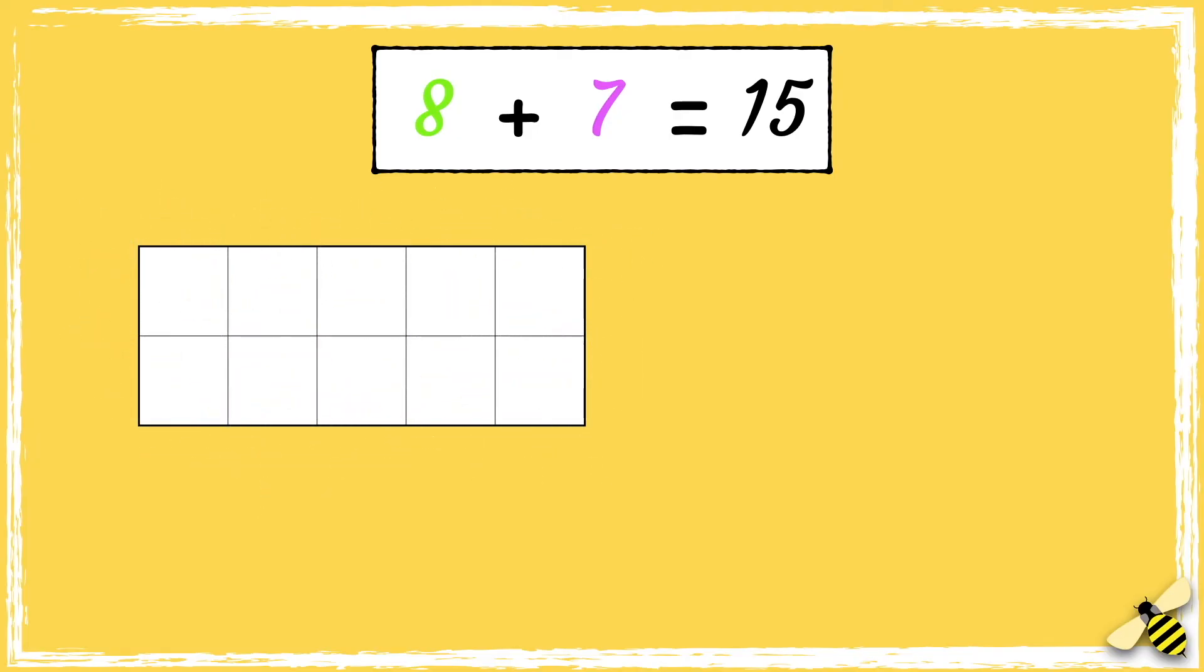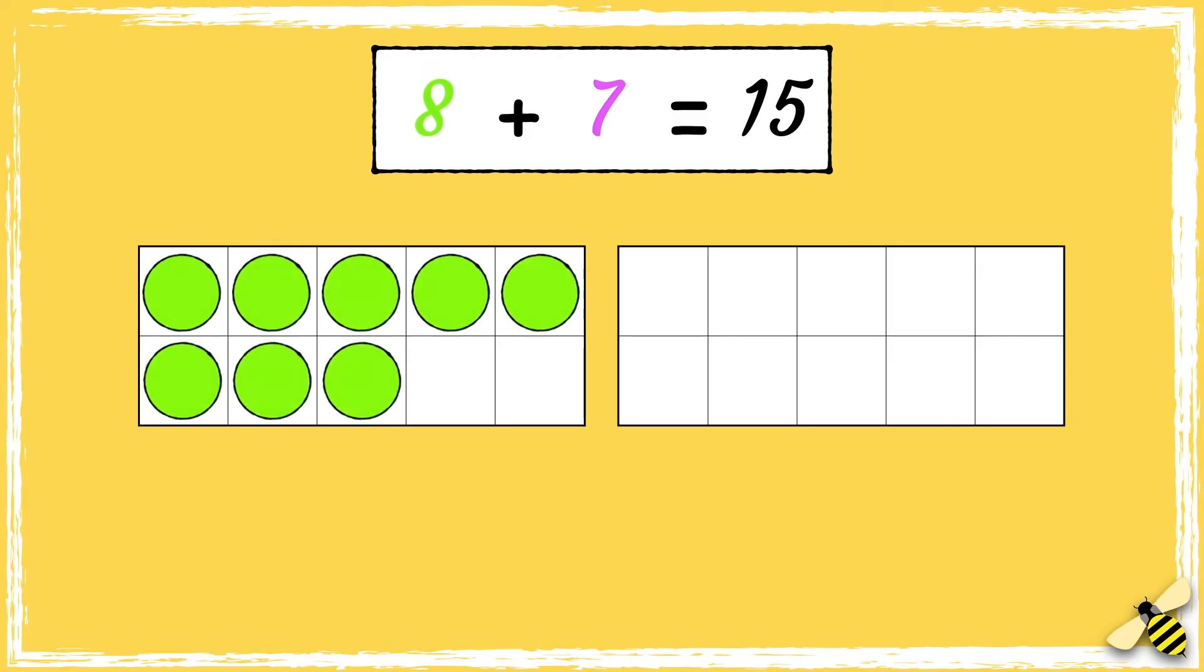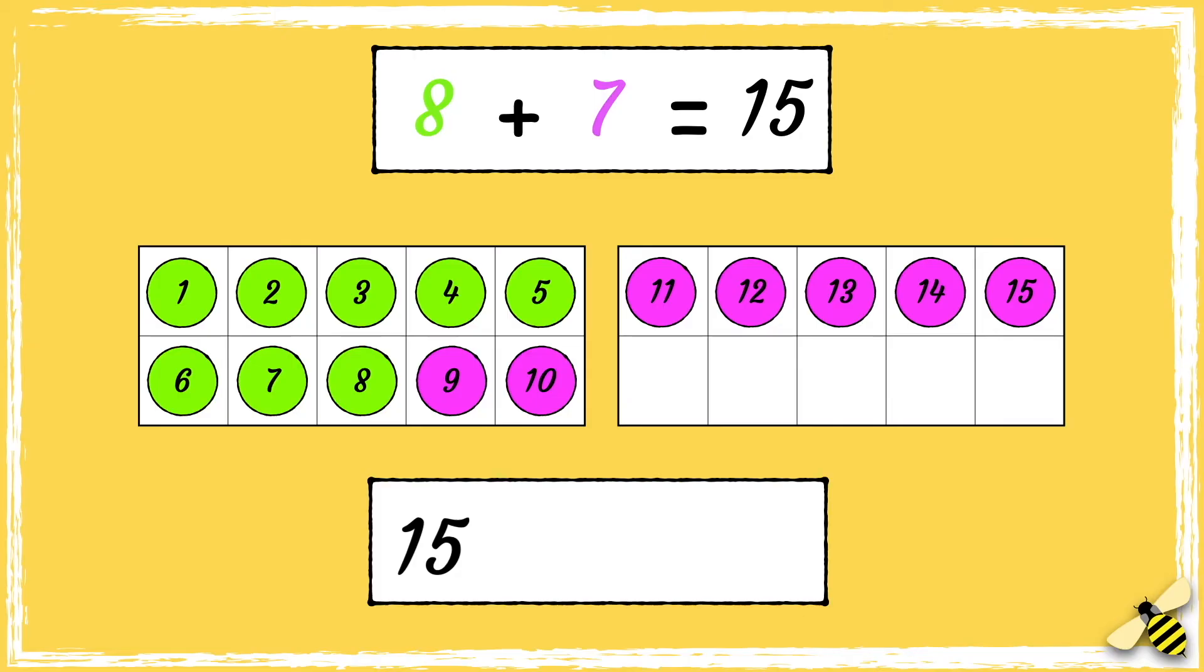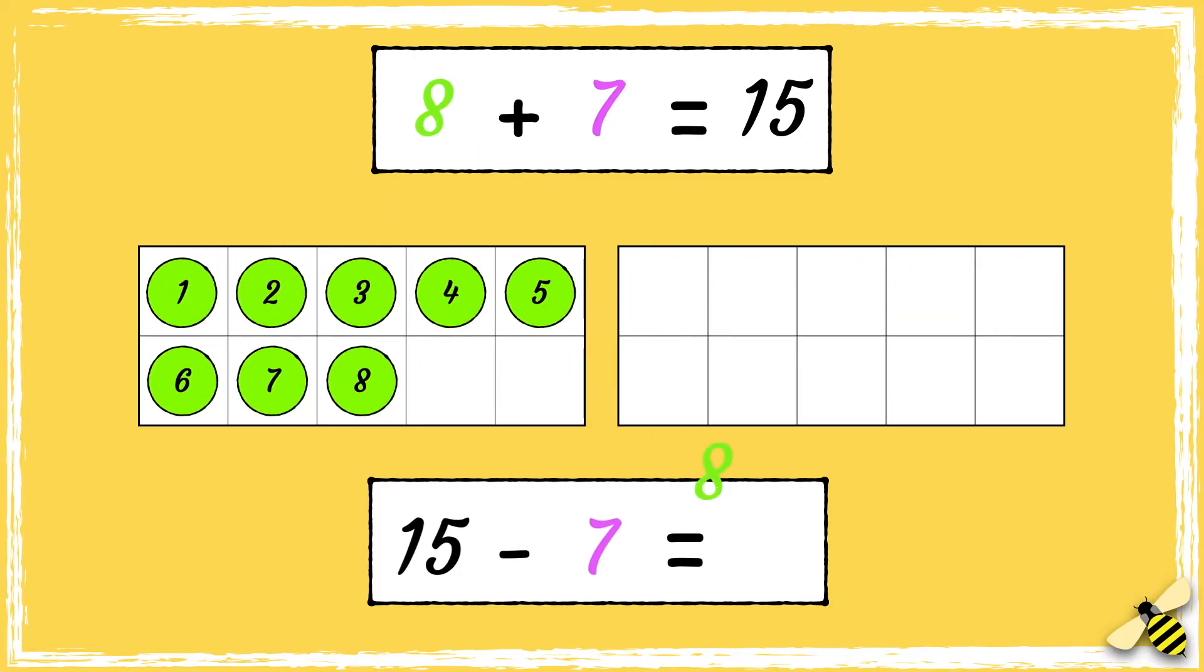Let's look at another example: 8 add 7 equals 15. For the first method, we'll use a tens frame. Let's start with 8, add 7. I can see that there are 15 dots out of the 20 spaces. Let's check using the inverse operation. So we start with 15 dots, we take away 7, and we're left with 8. So the calculation is correct.